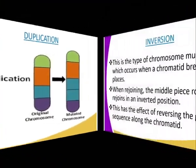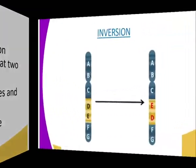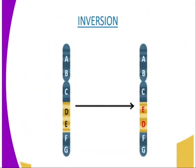The next type of chromosomal mutation is inversion. This occurs when a chromatid breaks at two places, the middle piece rotates and rejoins in an inverted position. This has the effect of reversing the gene sequence along the chromatid. The consequence depends on the group of genes affected — it might bring closer together genes whose combined effects are advantageous or disadvantageous. As you can see in our diagram, the original chromosome had sequence DE, but after the mutation it has become ED.